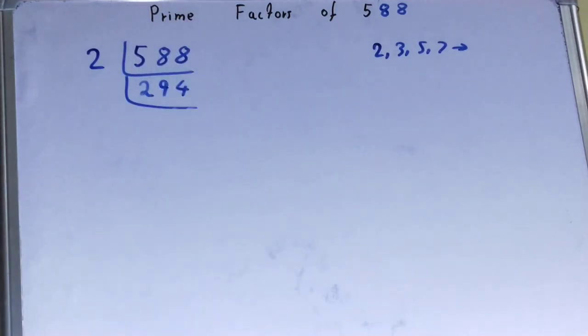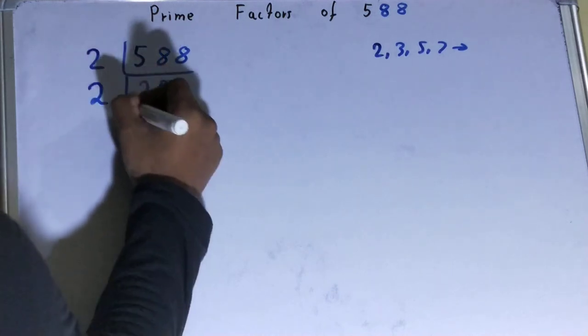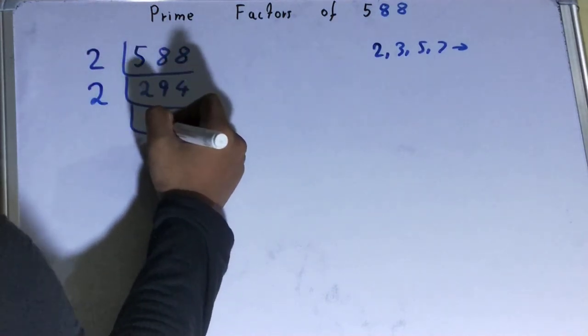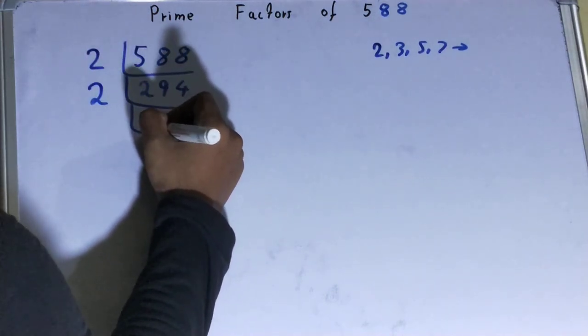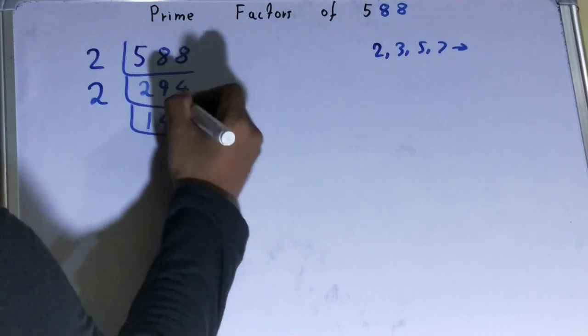Now is the number 294 further divisible by 2? Yes it is divisible. So divide it. And you'll be left with 147. Right.